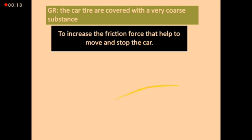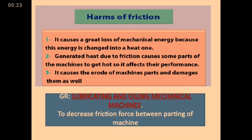Harms of friction force: it causes a great loss of mechanical energy because this energy converts into heat. Moving parts of machines rubbing against each other convert kinetic energy into heat, which causes damage or erosion of the machine, and a lot of money is wasted. To overcome this harm, we use lubrication and oiling of machines. When asked why we lubricate machines, the answer is: to decrease friction force between the parts of the machine.